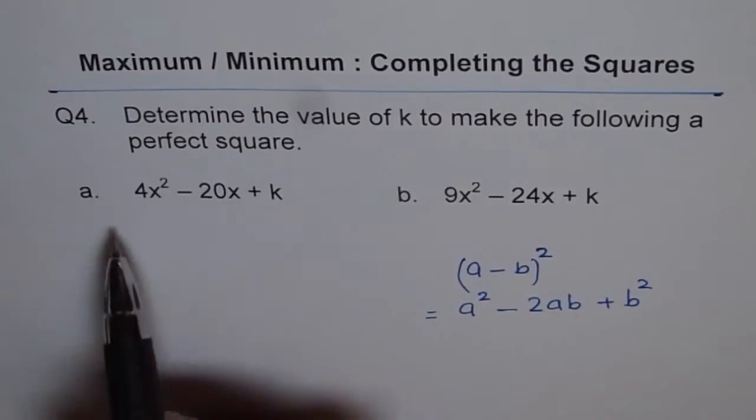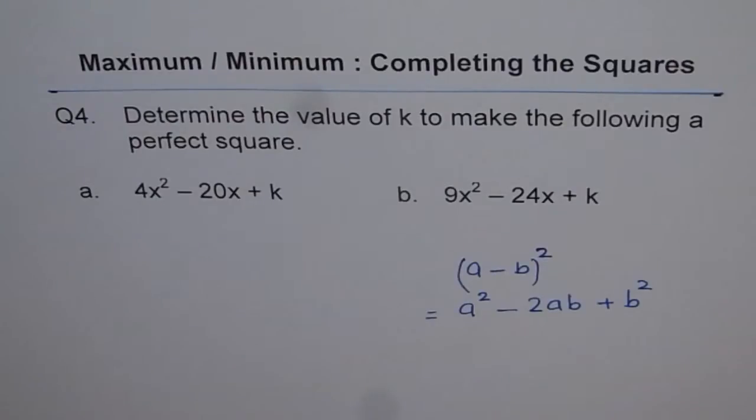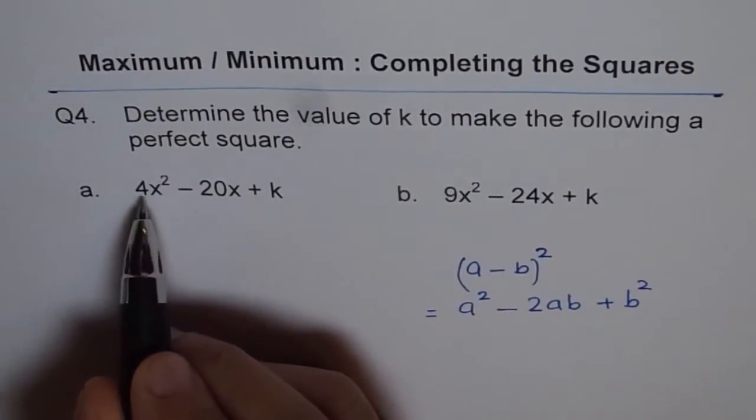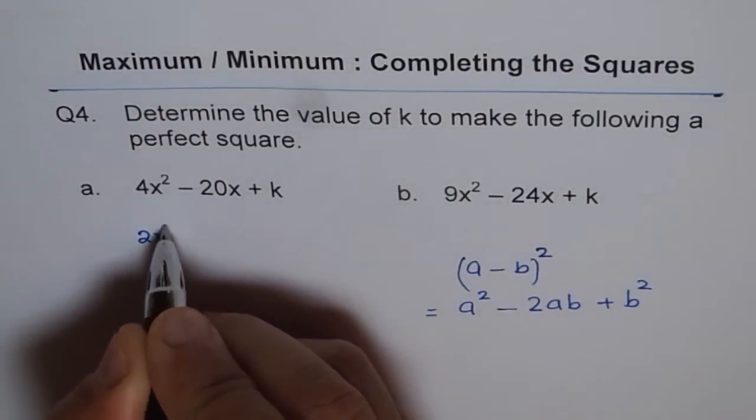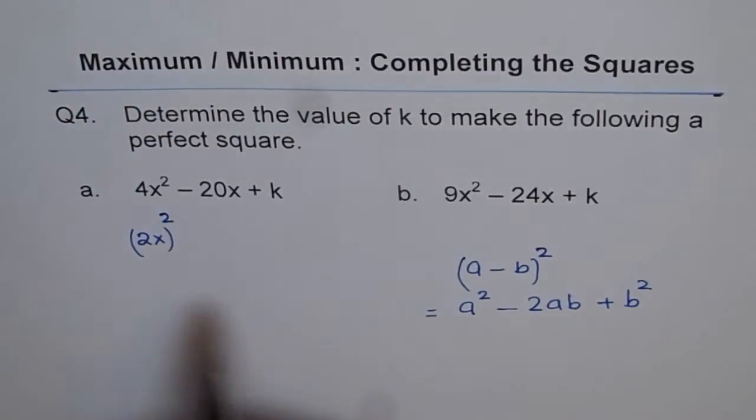Now let me do part A for you using this strategy. So I can write 4x² as what? (2x)². You see that? So my A becomes 2x.